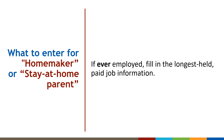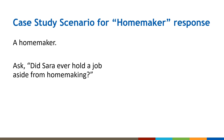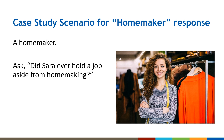If the decedent was ever employed, always fill in the longest-held job for usual occupation and industry items. In this scenario, you are told the decedent was a homemaker. Ask more questions — did they ever hold a job aside from homemaking? You find out they worked for 18 years as a sales clerk at Tracy's, a department store chain. Afterwards, they left that job and became a homemaker for 22 years. For usual occupation, select the paid job held for the most years: use sales clerk for the usual occupation and department store for the industry.